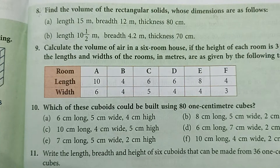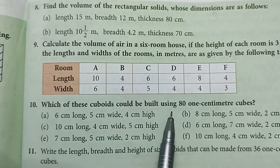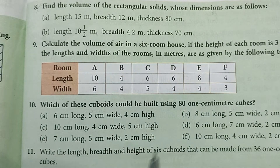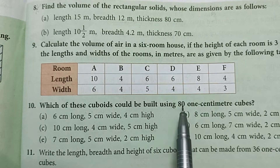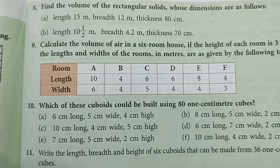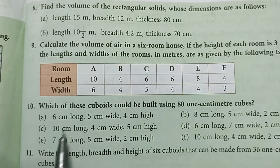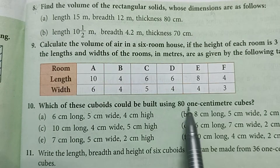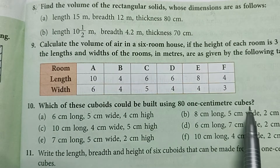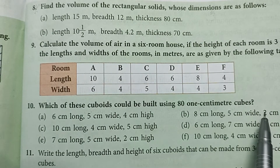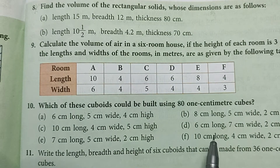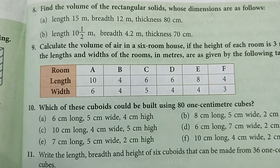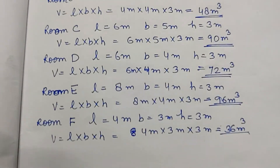Now question number 10: which of these cuboids could be built using 81 centimeter cubes? This means we will find out the volume of all the cuboids and check which one has a volume of 81 centimeter cubes. We will find out the volume of all the cuboids to determine the answer.